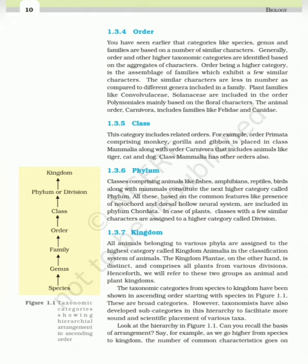Class includes related orders. For example, order Primata comprising monkey, gorilla and gibbon is placed in class Mammalia along with order Carnivora that includes animals like tiger, cat and dog. Classes comprising animals like fishes, amphibians, reptiles, birds along with mammals constitute the next higher category called phylum. Based on common features like the presence of a notochord and dorsal hollow neural system, these are included in phylum Chordata. In the case of plants, classes with a few similar characters are assigned to a higher category called division.